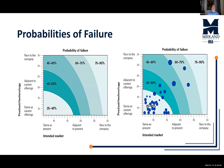Here's what our graph looks like. We can see probabilities of failure plotted against product technology and intended market. If the intended market and product technology are the same as our current offerings, the probability of failure is very low — 25 to 40%. As we move to adjacent offerings and adjacent markets, risk increases to 40–50% and 45–60%. The farther out we get, the greater the probability of failure.